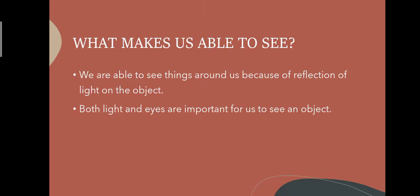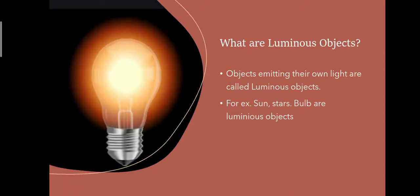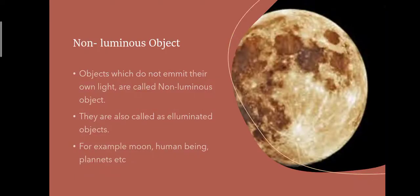Both light and eyes are important for us to see an object. Now, there are two kinds of objects. First comes luminous objects — objects emitting their own light are called luminous objects. For example, the sun, stars, and bulbs are luminous objects.